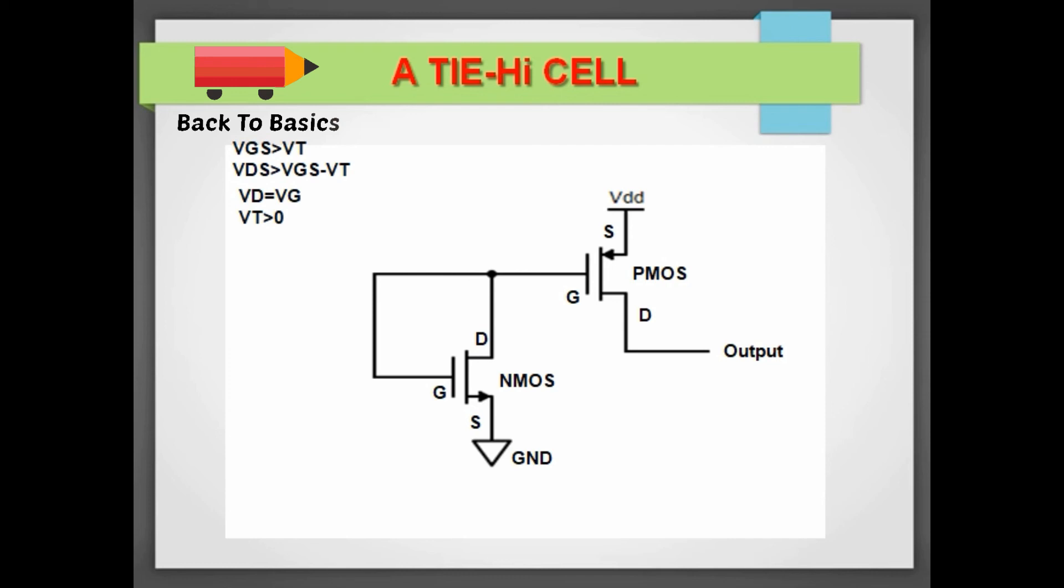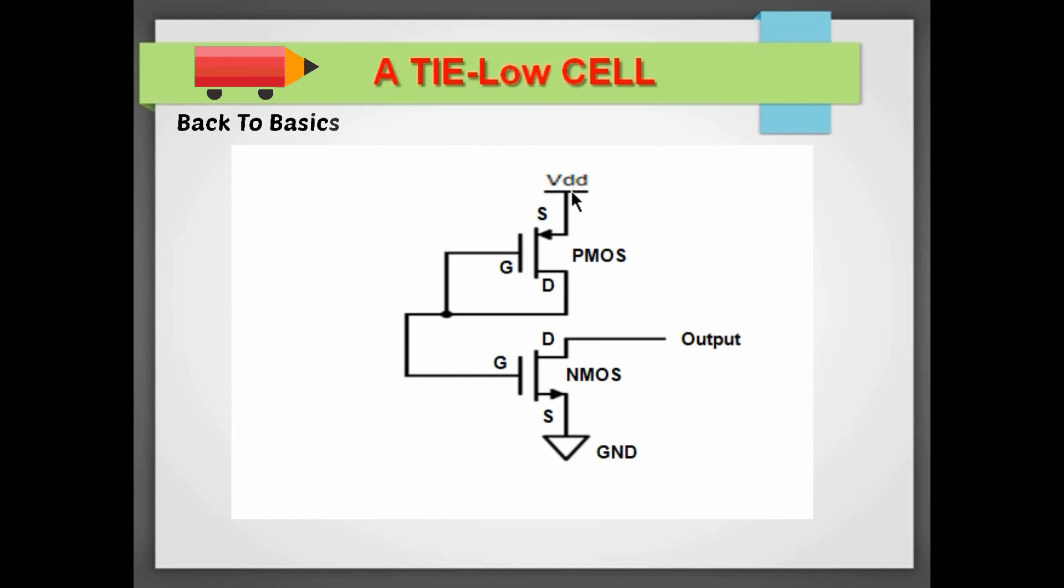Now similarly, let's see the working of a tie-low cell as well. Similarly here, the gate and drain of this PMOS is shorted, so this PMOS is in saturation mode and will act as a pull-up resistor. So it will always give a high voltage here.